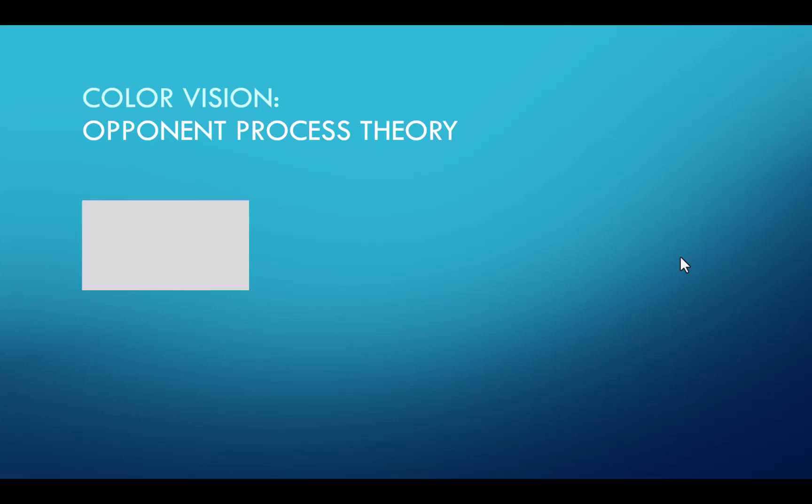So the opponent process theory used to be thought to oppose the trichromatic theory. But now most vision researchers actually accept the idea that the trichromatic theory describes what happens at the level of the eye, in the retina, with the light waves hitting those photoreceptors and there being three different types of cones. While the opponent process theory has more to do with the perception of those light waves. According to the theory, there are three opponent channels.